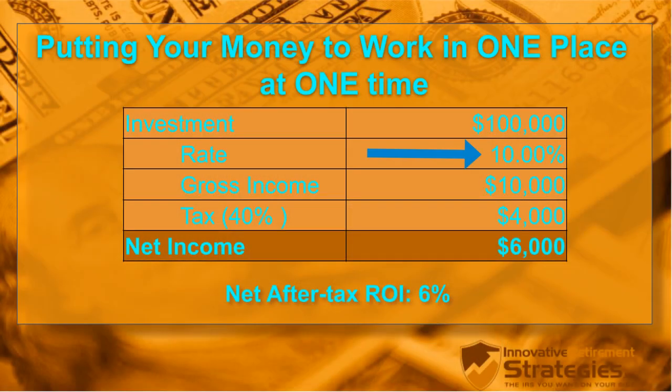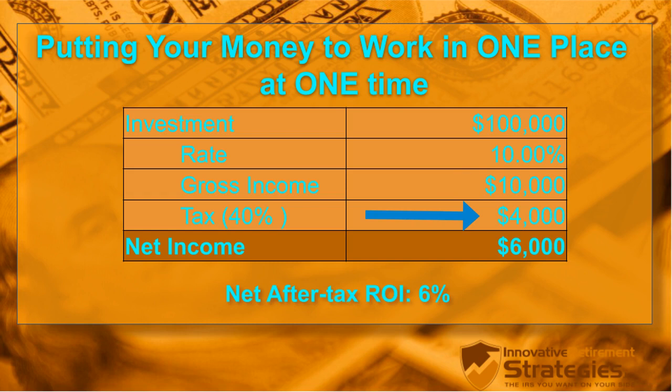In the first baseline example, we invest $100,000 at 10%, finishing the year with $10,000 of income. In the 40% tax bracket, the tax on that $10,000 is $4,000, leaving an after-tax return of $6,000 — a 6% net return. Even when you take your own cash and invest, you still have to account for taxes. Your net after-tax rate of return in this scenario is 6%, so if you reinvest that gain, you'd only be reinvesting $6,000 the following year.